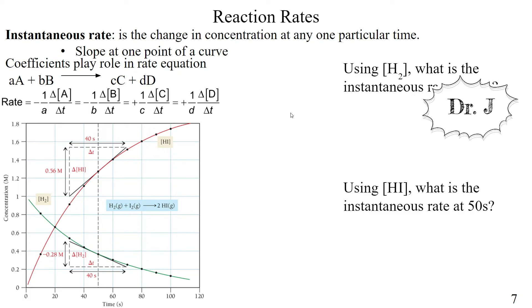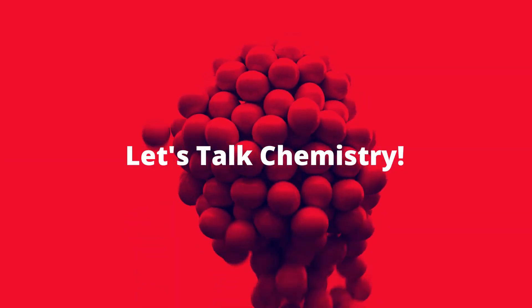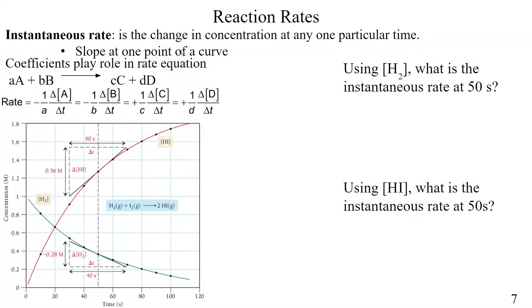Let's talk about one more thing with reaction rates: instantaneous rate. This is basically the change in concentration at one particular time. At that point in time, we're trying to see what the rate is. You could think of this as a slope at one point of a curve.